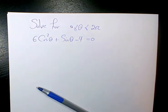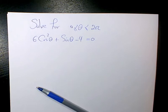In this video I want to show you how to solve this trigonometric equation, which is 6 cosine squared theta plus sine theta minus 4 equals to 0. And we need to solve it for theta between 0 and 2 pi.